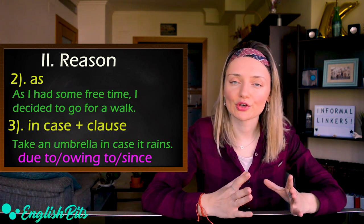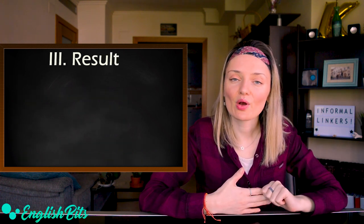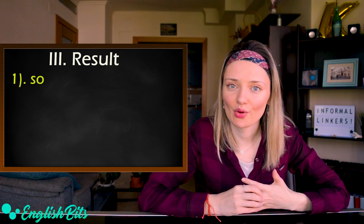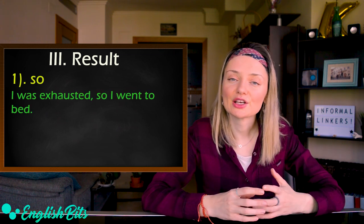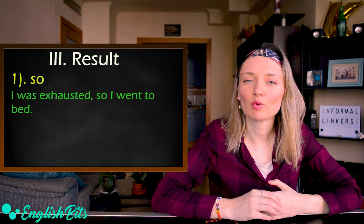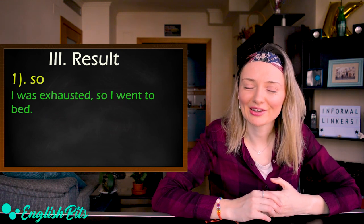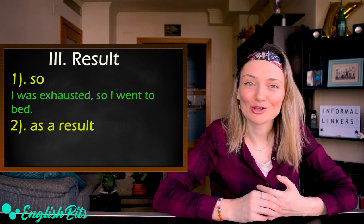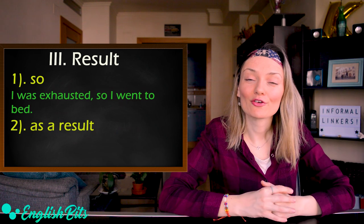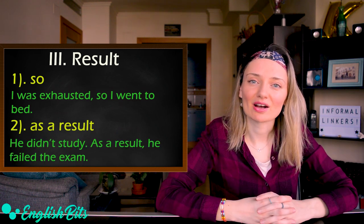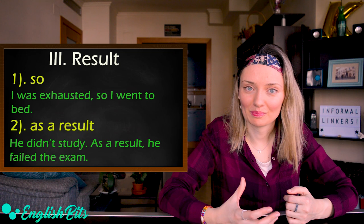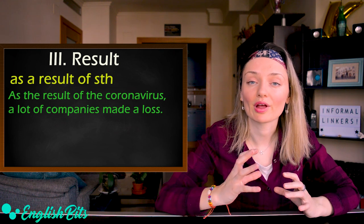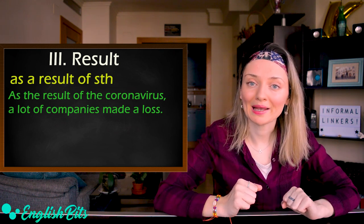Now let's move on to our third group, which is result. The most common linker to express result is 'so' — for example: I was exhausted, so I went to bed. Next: 'as a result,' which is more formal and usually goes at the beginning of a sentence — for example: he didn't study; as a result, he failed the exam. We can also say 'as a result of something' — for example: as a result of the coronavirus, a lot of companies made a loss.